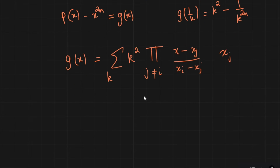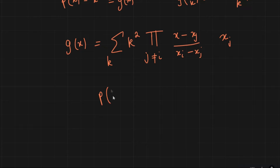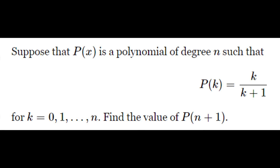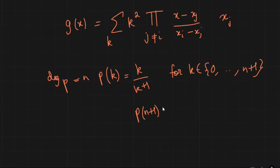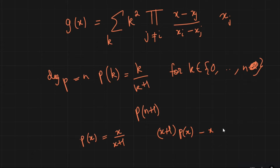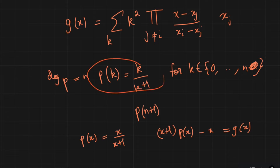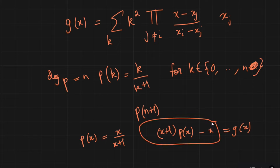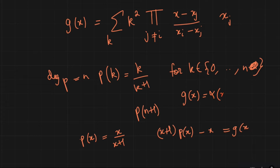At this point I remembered a problem I had done before — something like p(k) = k/(k+1) for n+1 values, where p was a degree n polynomial, and the problem asked for p(n+1). The approach there was to rewrite it as: the polynomial (x+1)p(x) - x, which I'll call g(x), has n+1 roots. So I could factor it as alpha times x(x-1)···(x-n). That's how we did that problem.